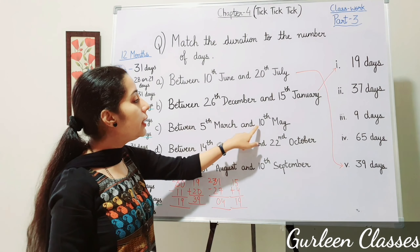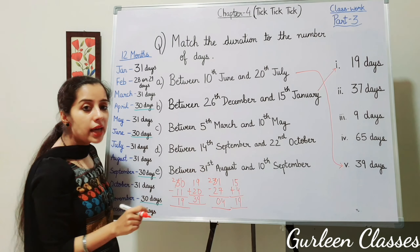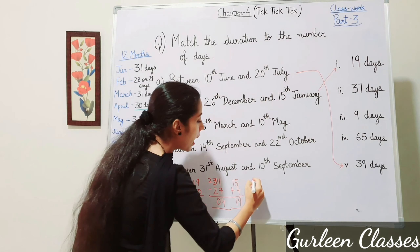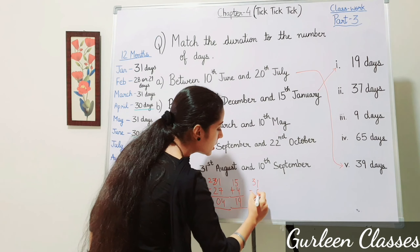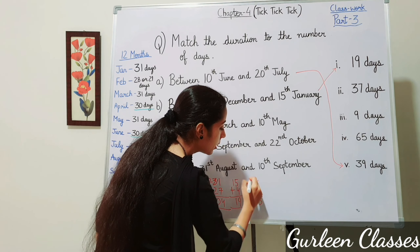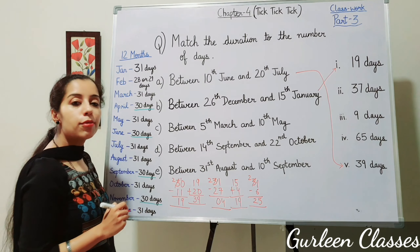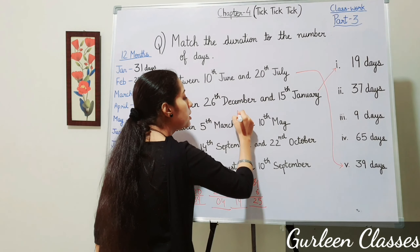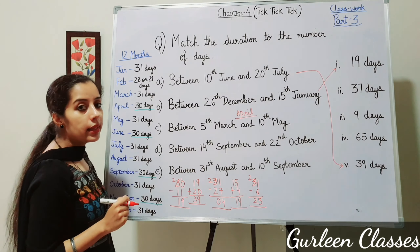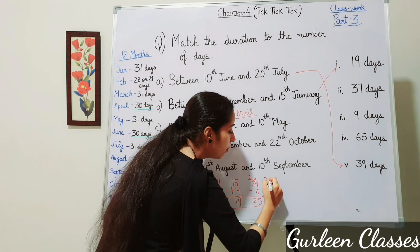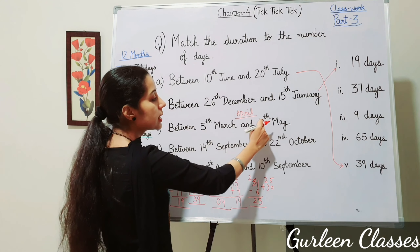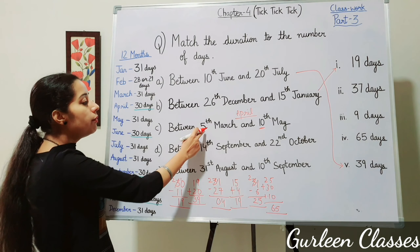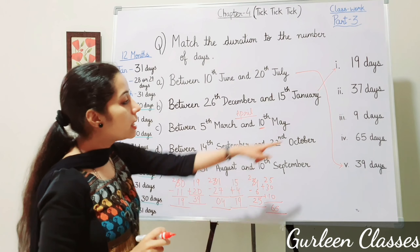Part C: between 5th March and 10th May. March has 31 days: 31 minus 6 equals 25 remaining days in March. Then April has 30 days. Then add 10 days of May: 25 plus 30 plus 10 equals 65 days.